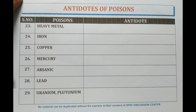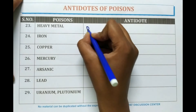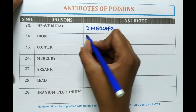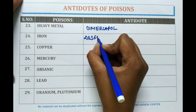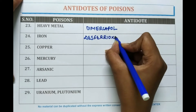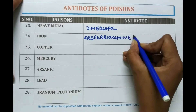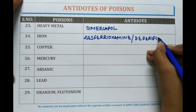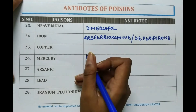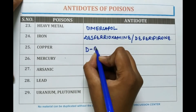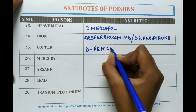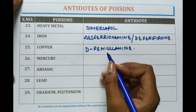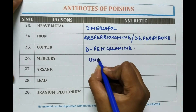In case of heavy metal poisoning, dimercaprol is given. In case of iron poisoning, desferrioxamine or deferiprone is given. In copper poisoning, D-penicillamine is given. In case of mercury poisoning, unithiol is given.